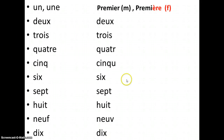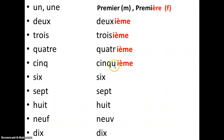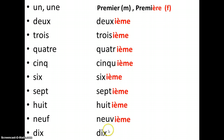So the ordinal numbers are: premier/première (1st) — premier for masculine, première for feminine, note the extra E added for feminine. Then: deuxième (2nd), troisième (3rd), quatrième (4th), cinquième (5th) — don't forget to add the U — sixième (6th), septième (7th), huitième (8th), neuvième (9th), dixième (10th).